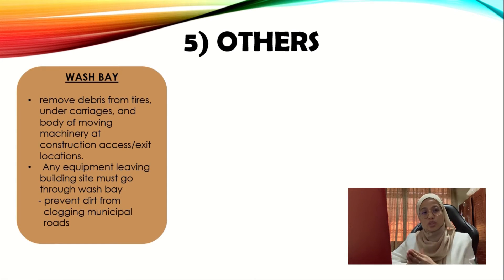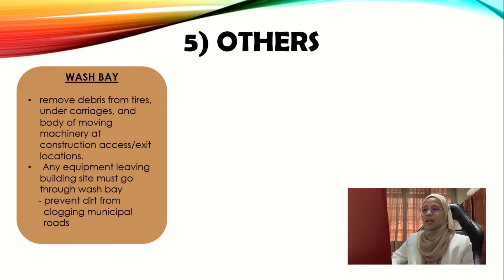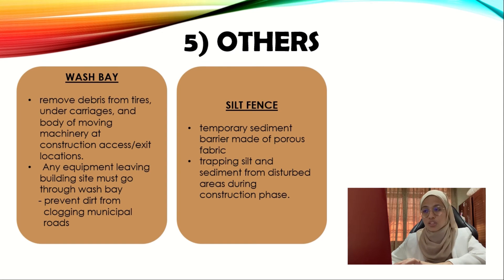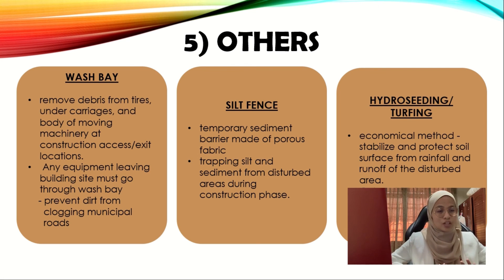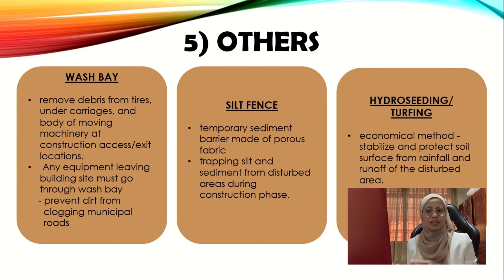There are several additional components in erosion and sedimentation. First, the wash bay, which functions to remove debris from tires, undercarriage, and body of moving machinery at construction access or exit locations. Any equipment leaving the construction site must go through the wash bay to prevent dirt from clogging municipal roads. Second, the silt fence, which serves as a temporary sediment barrier made of porous fabric, helping to trap silt and sediment from disturbed areas during the construction phase. Third, hydroseeding or turfing — an economical method to stabilize and protect soil surface from rainfall and runoff of disturbed areas, used for designing cut and fill slope surfaces.